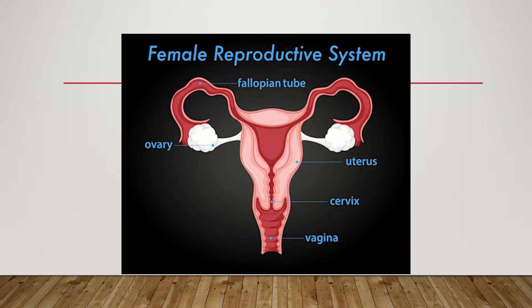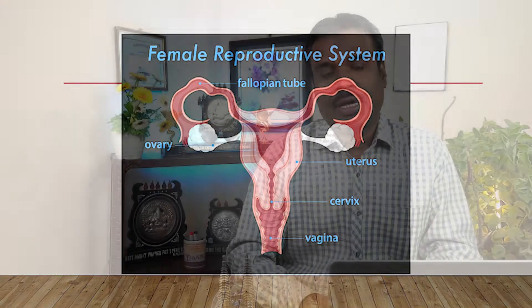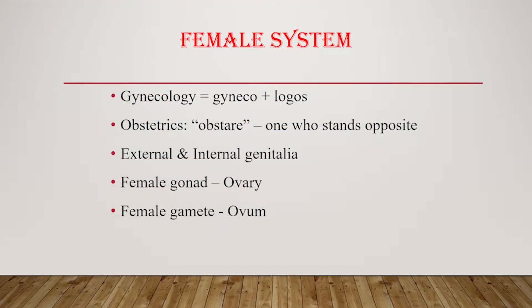Before moving on to the reproductive system, we need to know about two specialties of medicine which we call gynecology and obstetrics. A gynecologist sometimes acts as an obstetrician and vice versa. Please break this word: gynecology can be broken as 'gynecos' plus 'logos.' Gyneco refers to women and logos means study. So this specialty is involved with the treatment of diseases which occur in a female.